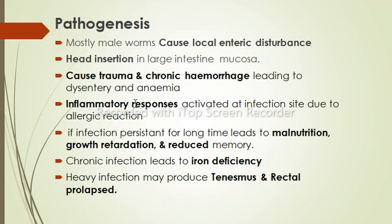Persistent infections are associated with malnutrition, growth retardation, and reduced memory in children. Chronic infection can lead to iron deficiency anemia, which may cause clubbing of the nails. Heavy infection may produce tenesmus — the urgency or feeling of needing to defecate due to peristaltic movement — and possibly rectal prolapse.